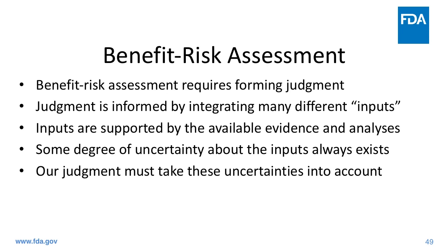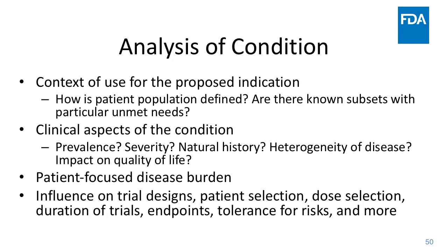Table one in the FDA's discussion document is where much of this comes from. Starting with the analysis of condition: this really sets up the context of use for the proposed indication, with little focus on the drug per se — more the disease or condition being treated. This covers how the patient population is defined, known subsets with particular unmet needs, the clinical aspects of the condition — is it rare versus common, what's the severity and natural history, is it rapidly or slowly progressive, what's the heterogeneity of the disease, and what's the impact to quality of life? Patients can really help us with this, as they live with these diseases every day.